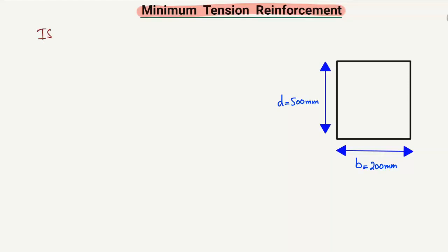According to IS 456:2000, clause 26.5.1.1, it states that the minimum tension reinforcement in a beam section is equal to As_min divided by BD, which equals 0.85 divided by fy.